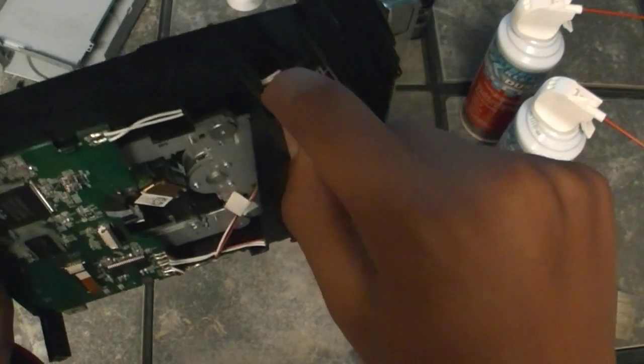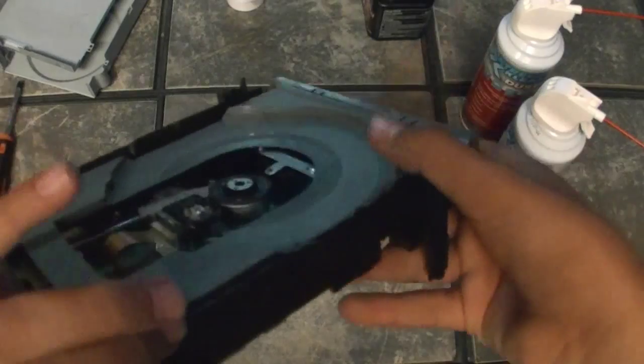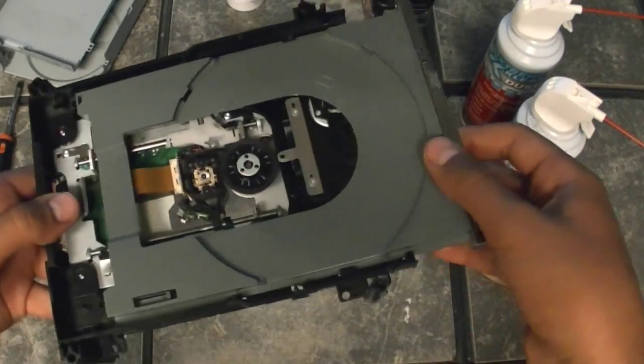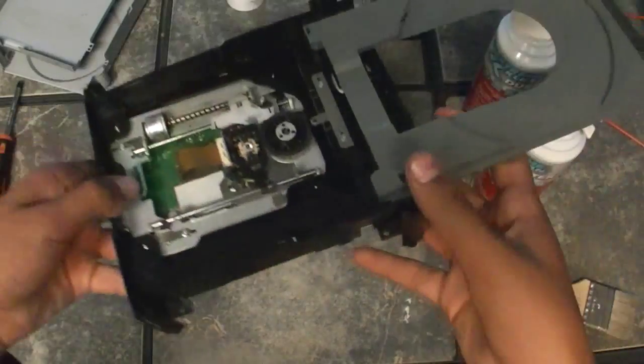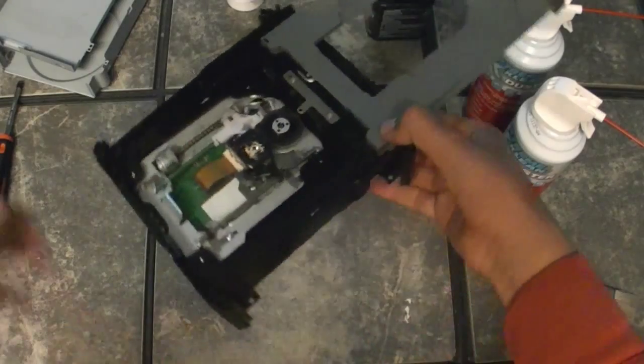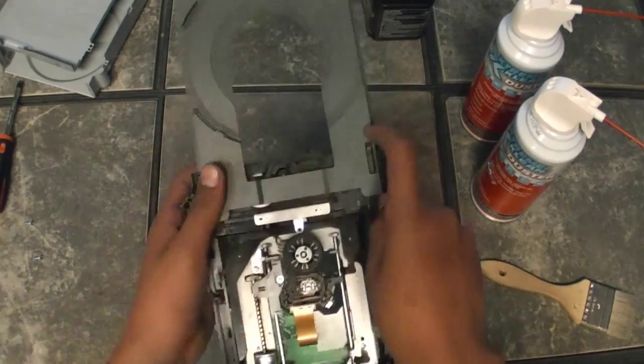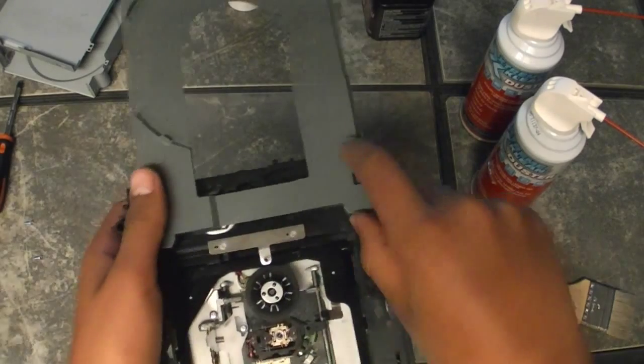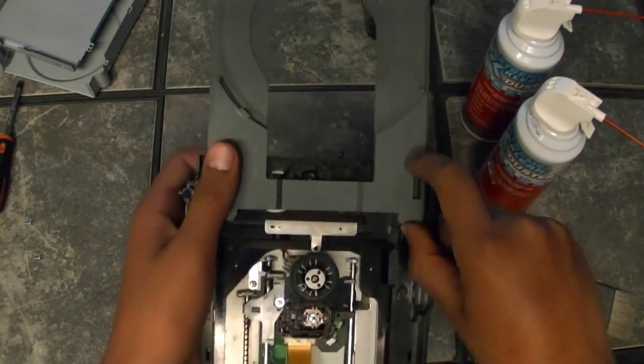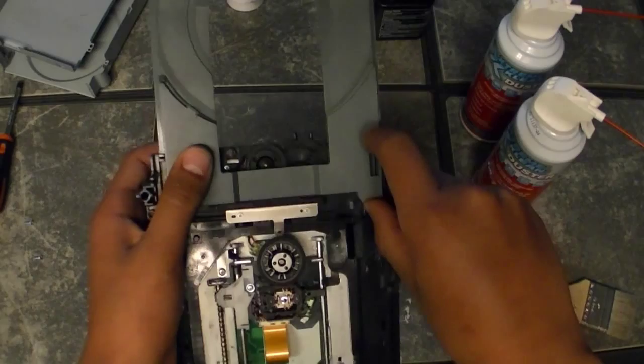What you want to do is push it down, not too hard but fast. And then now you should be able to pull out the tray.